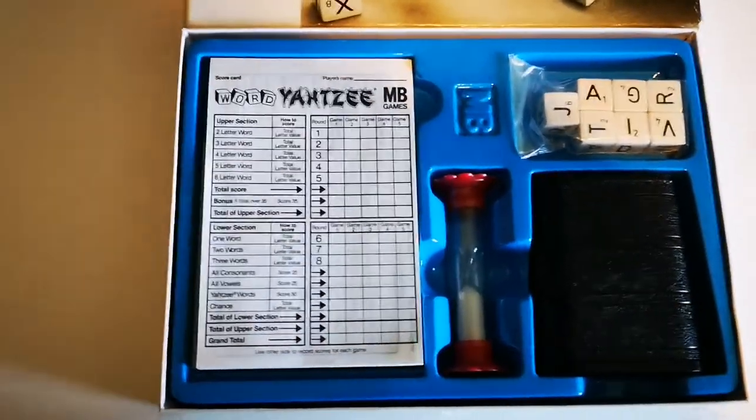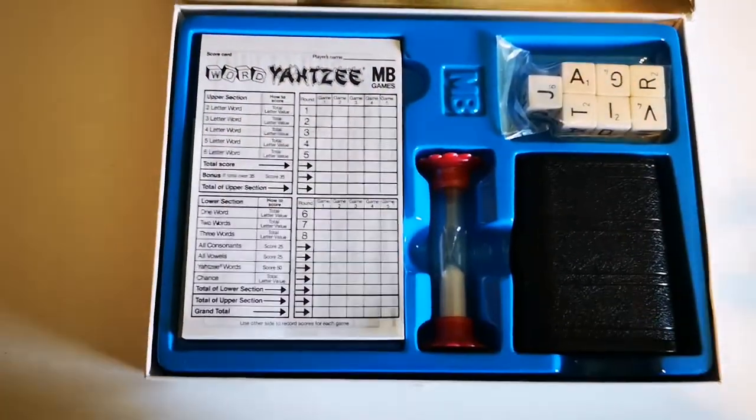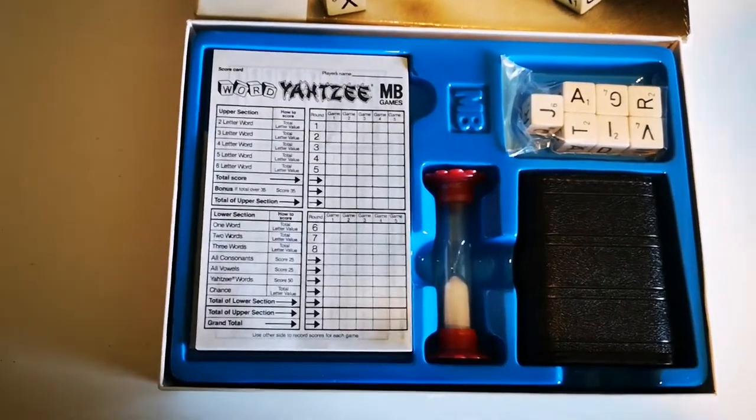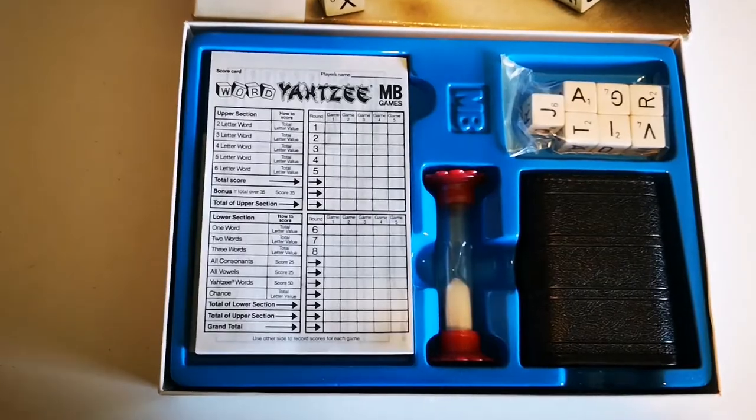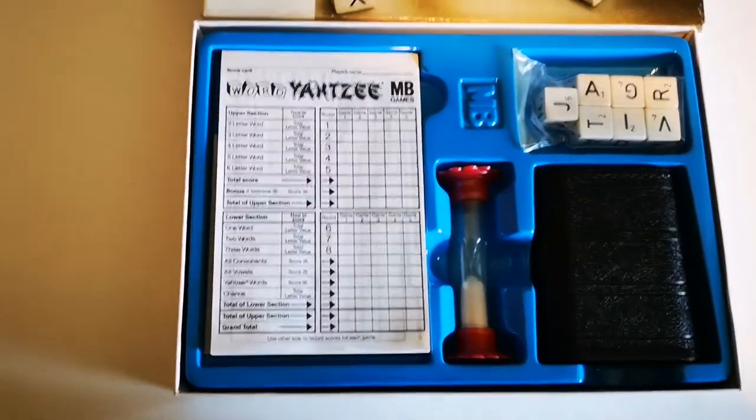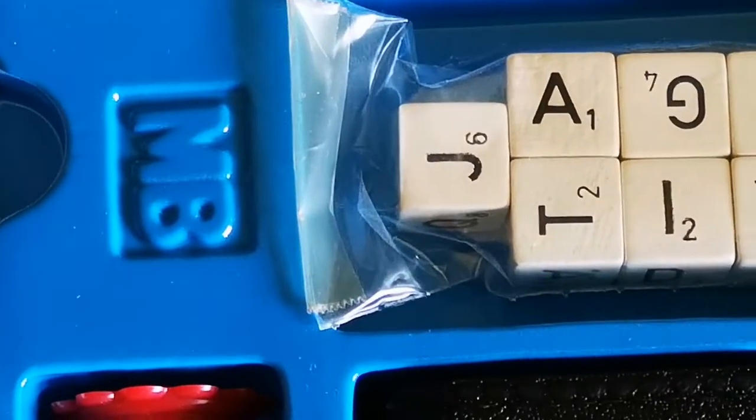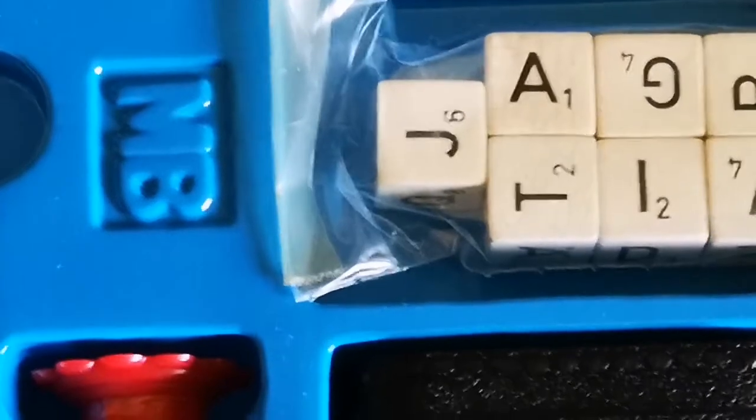And essentially the rules are, you shake the seven word dice, or the seven letter dice, in here, and then you try and make words out of the letters you get, and each letter has a certain point value. So if you made a three letter word, and let's say it was jet, and an e was a one, you can see, if we zoom in here, that a j is a six, a t is a two, let's say an e is a one, so you would basically get nine points for the word jet.